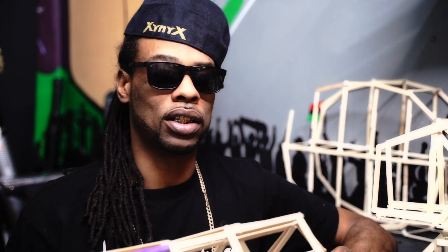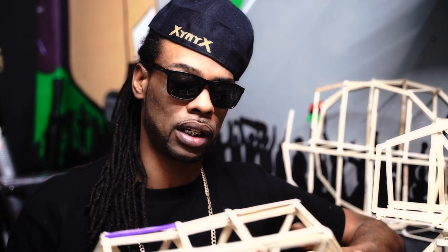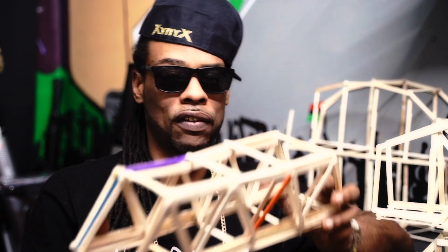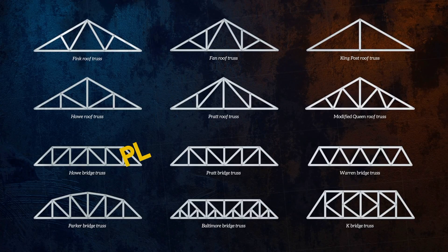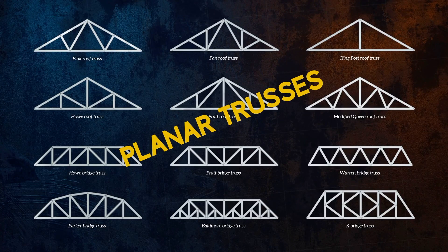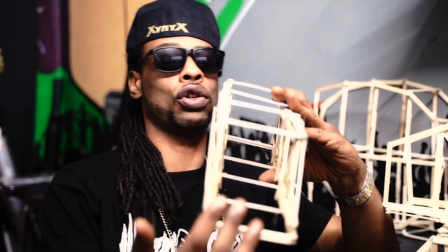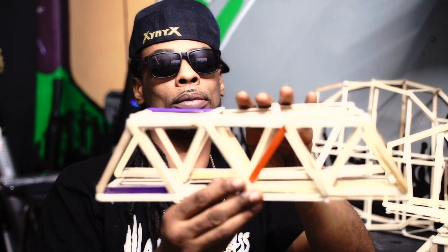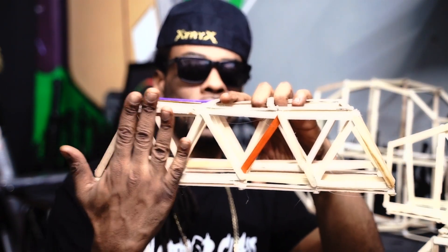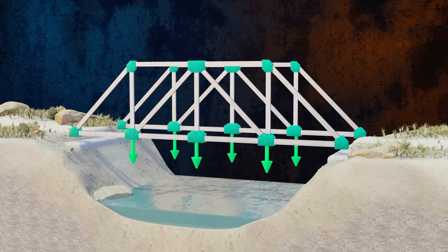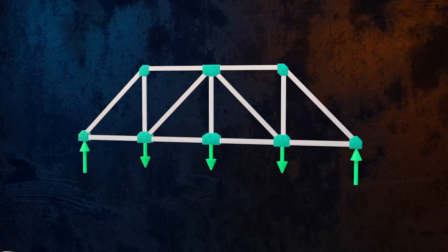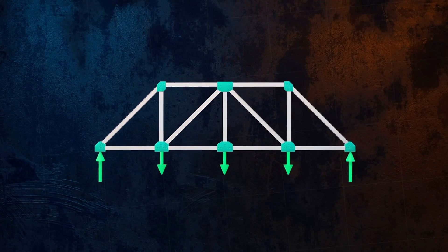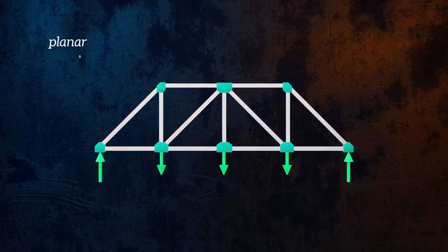Another key thing about these trusses is that they all have their plane in the same dimension — they're called planar trusses. The beauty of being able to analyze these bridges based off their plane is that we can describe them in a two-dimensional way, as if on a flat piece of paper, and you can draw your free body diagram based off this image — length and width.